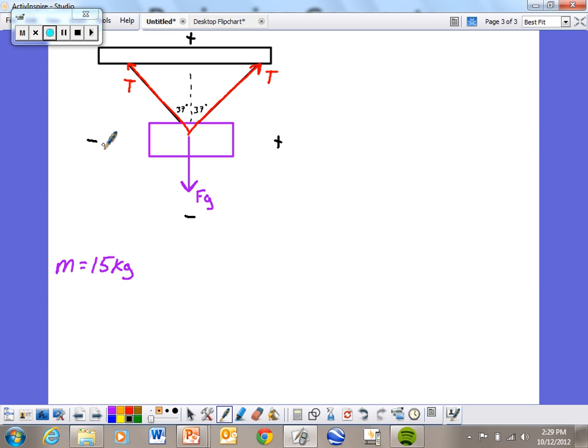The third step is always trying to find the components. We have two forces that are at angles. We have this T and we have this T. So I'm going to have a Y force for the tension on the right, but I'm also going to have a Y force for the tension on the left.